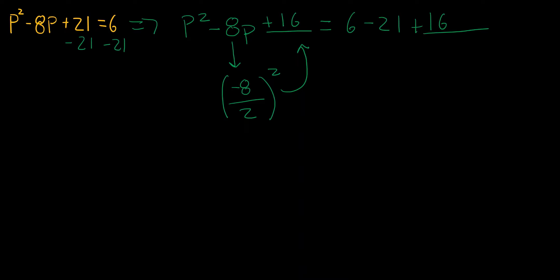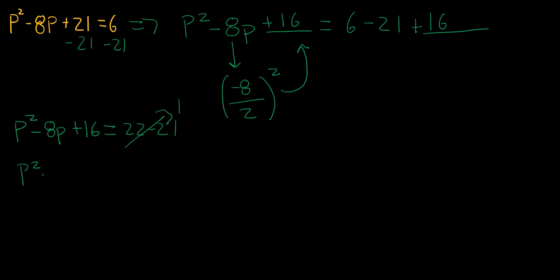Now this simplifies: on the right-hand side we have 6 + 16 - 21. That's 22 - 21, which gives us 1. So we end up with p² - 8p + 16 = 1.